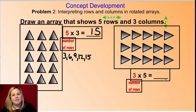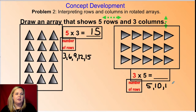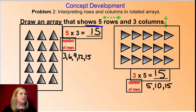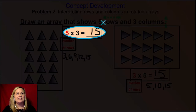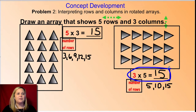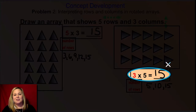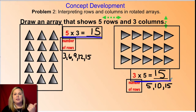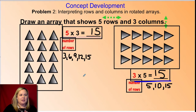Now for the second array, we count by fives because they're in groups of five: five, ten, fifteen. Notice: same factors and same product. Five times three equals fifteen, and three times five equals fifteen. Even though we flipped those factors, we still get the same product. All three numbers are the same on both sides.